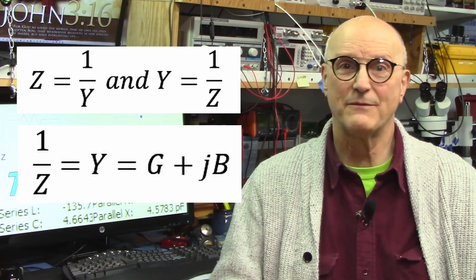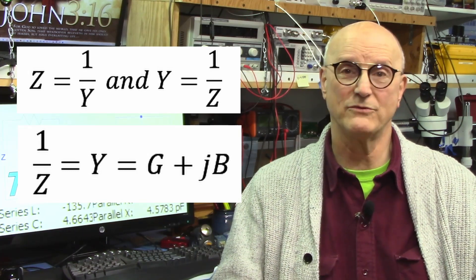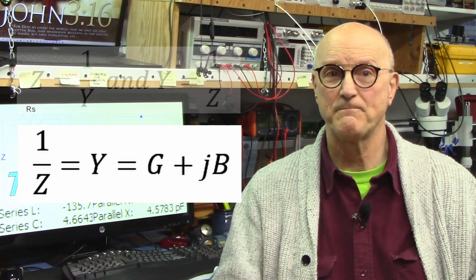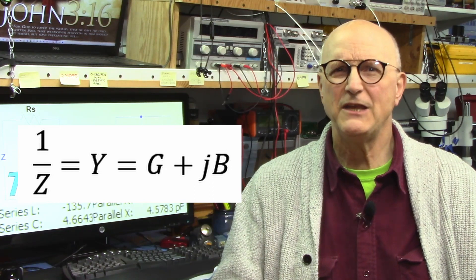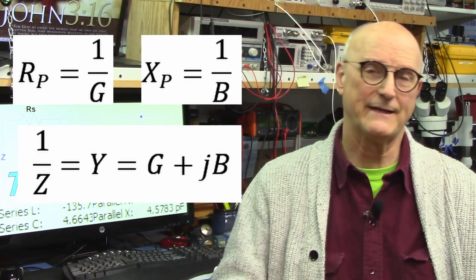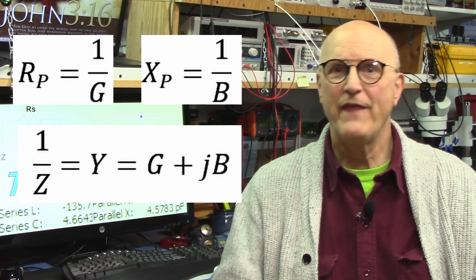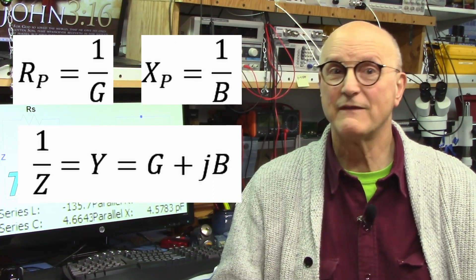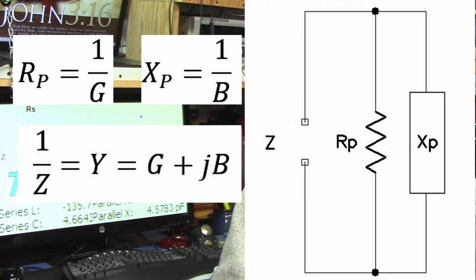If we then individually convert the conductance to resistance and the susceptance to reactance, then we get the component values that make up the parallel combination that results in the measured impedance.